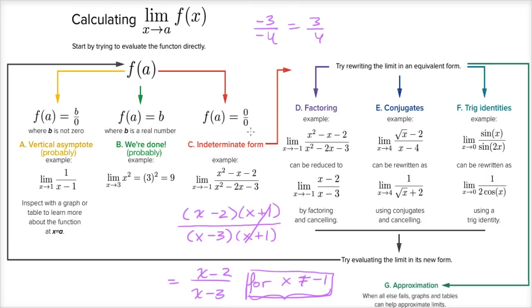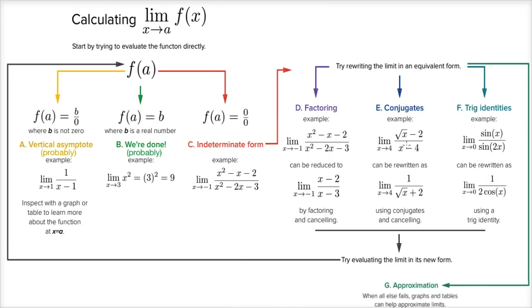I would categorize what we've seen so far as the bulk of the limit exercises you'll likely encounter. The next two I would call slightly fancier techniques. So if you get indeterminate form, especially with radical expressions like rational radical expressions, you might want to multiply by a conjugate.